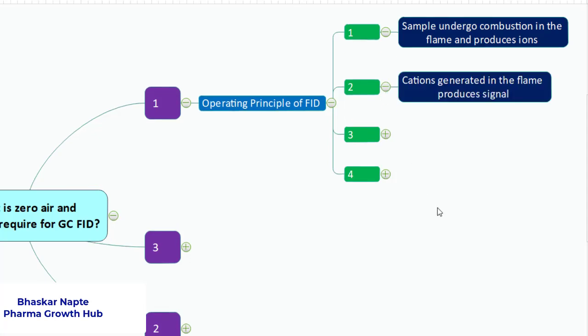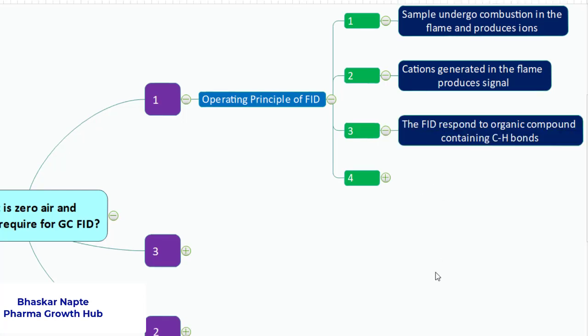The cations generated during the combustion in the flame are responsible for producing the signal. The FID responds to organic compounds containing carbon-hydrogen bonds or hydrocarbons. This is a very specific detector which predominantly responds to carbon-hydrogen containing compounds or hydrocarbons. It can be, let's say, methanol contains carbon-hydrogen bonds, ethanol contains carbon-hydrogen bonds. So these organic compounds FID responds very well.